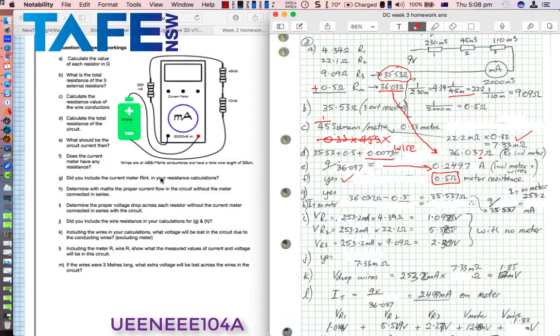Question G, did you include the current meter internal resistance R subscript int in your resistance calculations? Well again, I've written yes here, I have included that. If you've answered no, you should be thinking about why you didn't do it, because it certainly has got some internal resistance, just like we saw back in part one of the homework question.